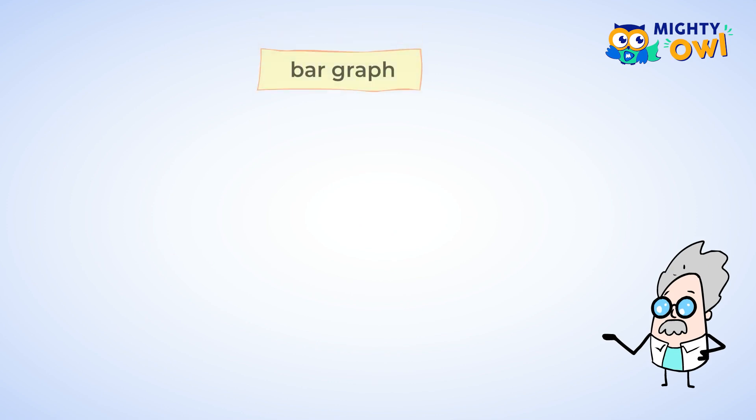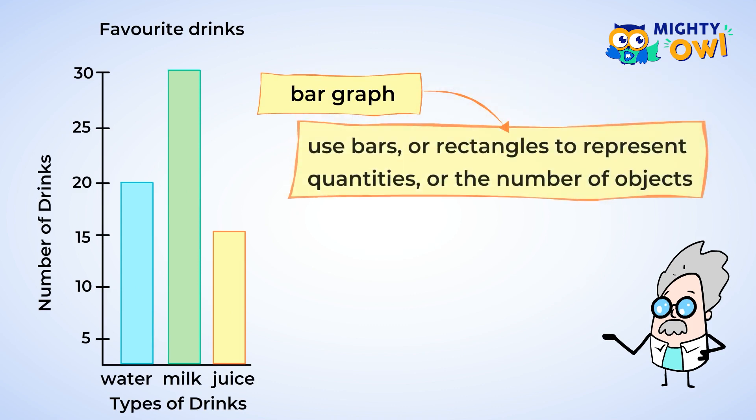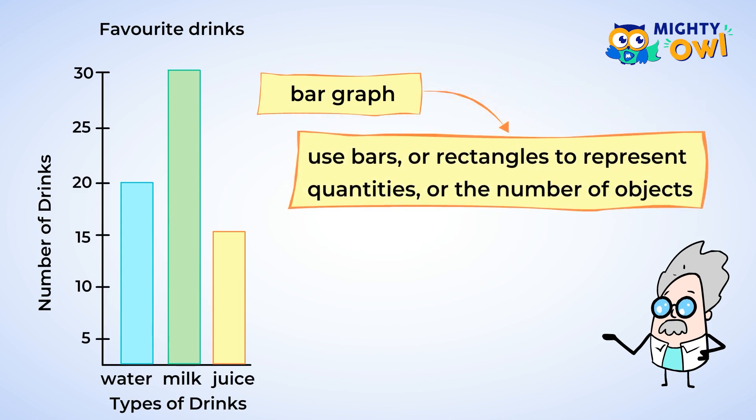It's called a bar graph. Bar graphs use bars, or rectangles, to represent quantities, or the number of objects. Notice the labels under the bars. The first bar is labeled water, and you see how high it goes? Look at the left side — see the numbers? Notice that the bar for water only goes up to 20.